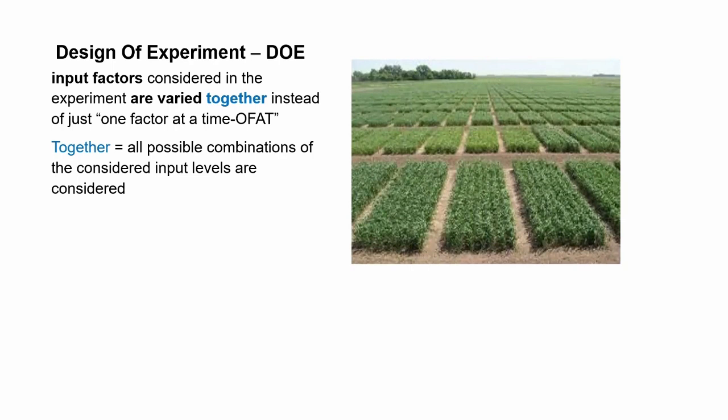What it means: we varied the inputs together, not one factor at a time. If you do this design of experiment — meaning all combinations — we could capture interactions, and this will be beneficial for robust design.